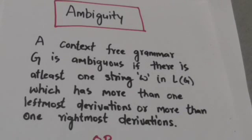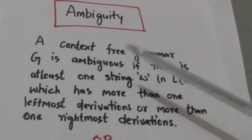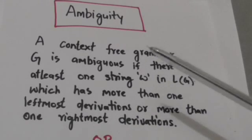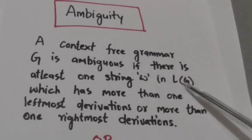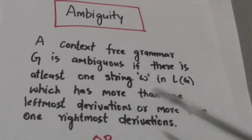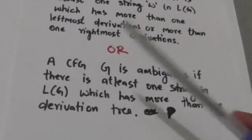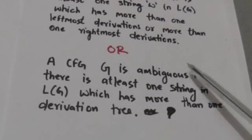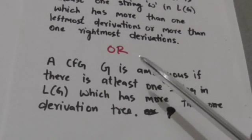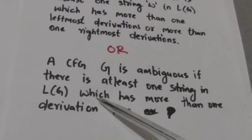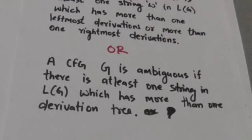Hello friends, welcome back. In this tutorial we will study about ambiguity. A context-free grammar G is ambiguous if there is at least one string W in the language of grammar G which has more than one leftmost derivations or more than one rightmost derivations. In simple words, a context-free grammar G is ambiguous if there is at least one string in its language which has more than one derivation tree.